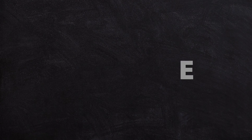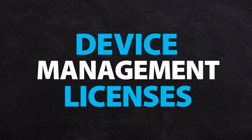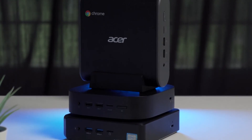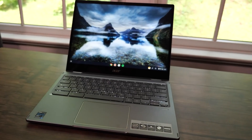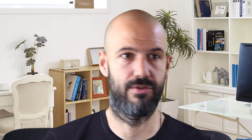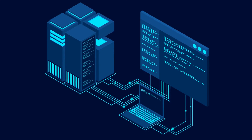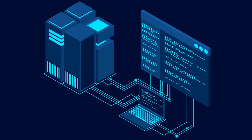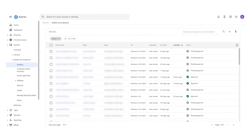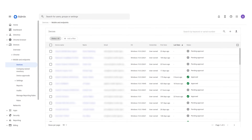If you've got device management licenses set up on Chrome devices, then you've got a whole bunch of data that actually comes through onto your account. And you can automatically see and have basic access to devices right from the Google Admin panel.